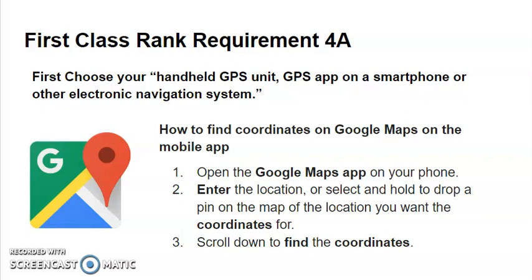Before you use any of them, familiarize yourself with how they work. If you're using Google Maps, open the Google Maps app on your phone. Enter the location or select and hold to drop a pin on the map of the location that you want the coordinates for. Then you can scroll down to find those coordinates, and it will give you those GPS coordinates.